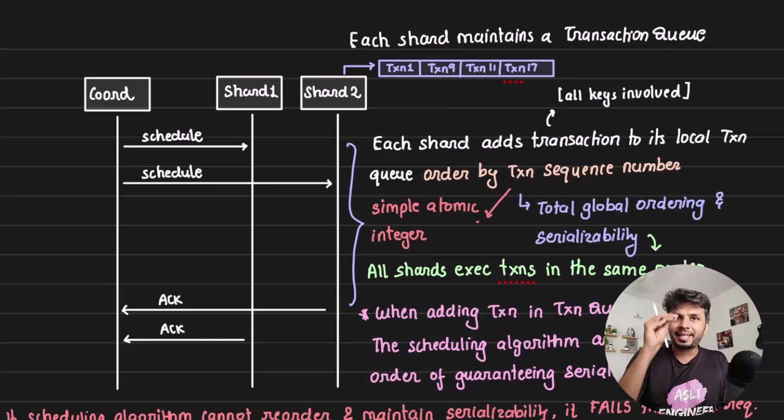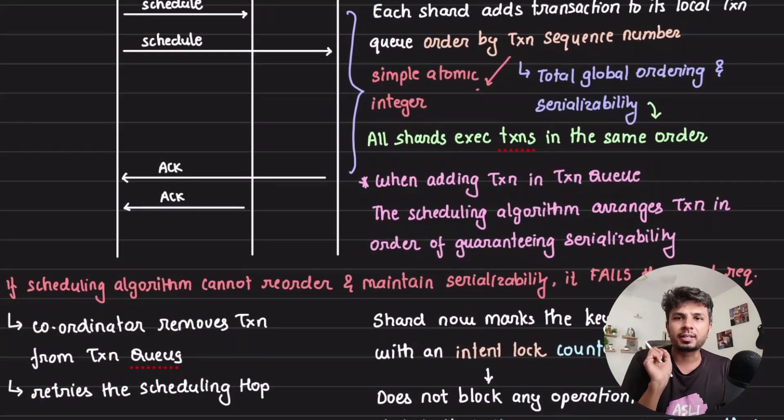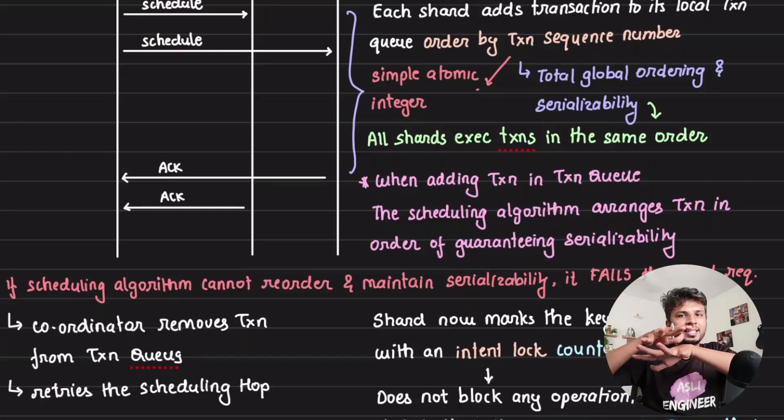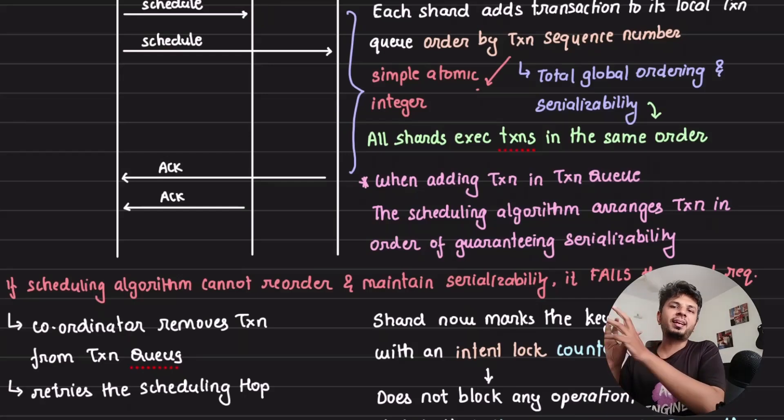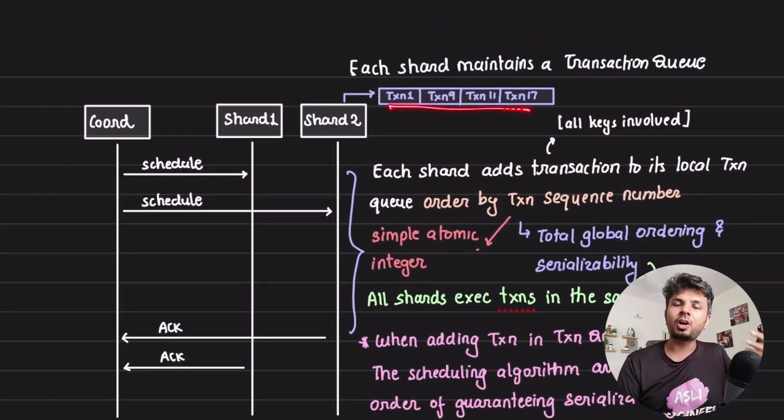When each shard gets a transaction, it adds it to the local transaction queue, which is ordered by sequence number. When it receives the transaction, there is a scheduling algorithm that runs. Basically, it needs to arrange the transaction in an order which maintains serializability, a classic property that almost every database needs to offer so that the global ordering of transaction is maintained. It would try to rearrange the transaction such that it does not lead to any conflicts. And the arrangement may be different than the order of the transactions.